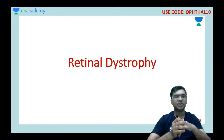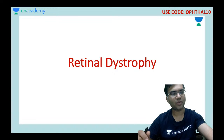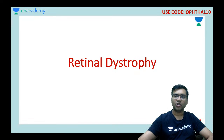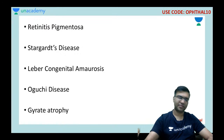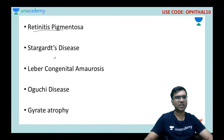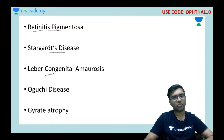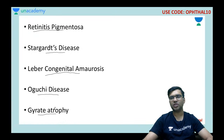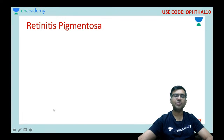With this I would be starting my session today on retinal dystrophy. The topics we would discuss are the most important ones through which questions are asked — retinitis pigmentosa, Stargardt's disease also called fundus flavimaculatus, Leber congenital amaurosis, Oguchi disease, and gyrate atrophy.